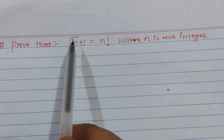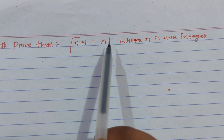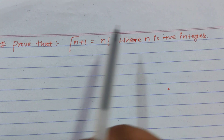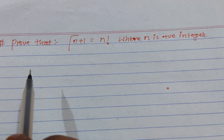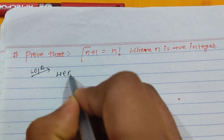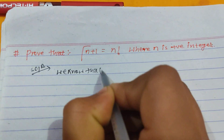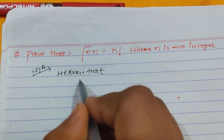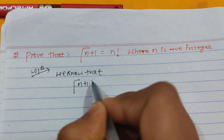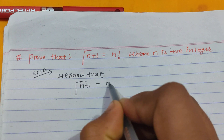Prove that Gamma(n+1) equals n factorial, where n is a positive integer. Solution: we know that Gamma(n+1) equals n into Gamma(n).